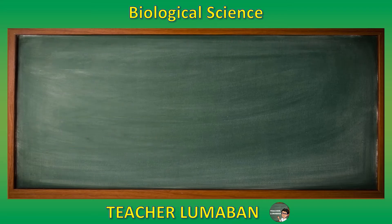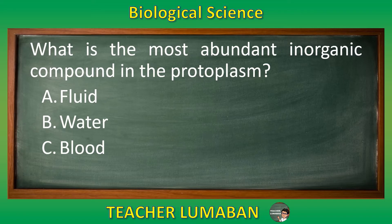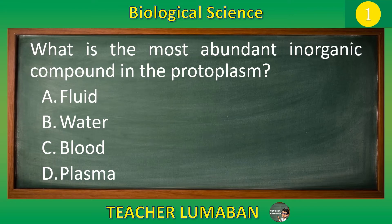What is the most abundant inorganic compound in the protoplasm? Letter A: fluid. Letter B: water. Letter C: blood. Letter D: plasma. Choose the suitable answer based on the given choices in 5 seconds. 5, 4, 3, 2, 1. The correct answer is Letter B, water. Water is the most abundant inorganic compound in the protoplasm.